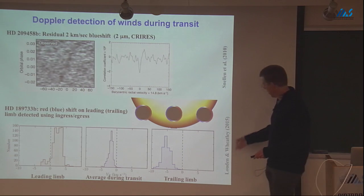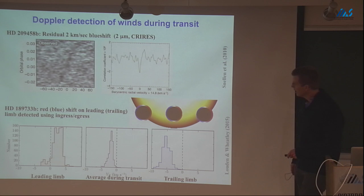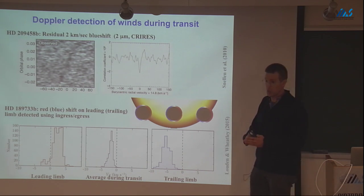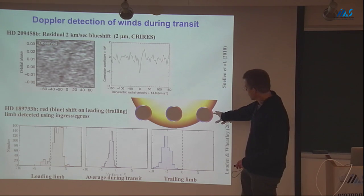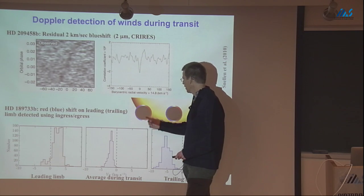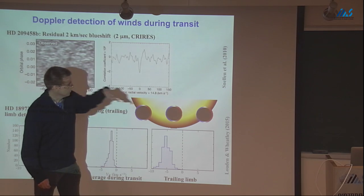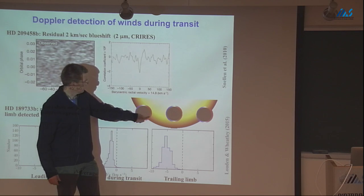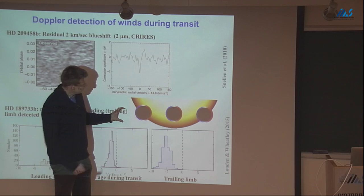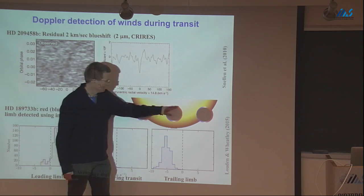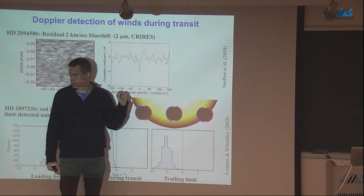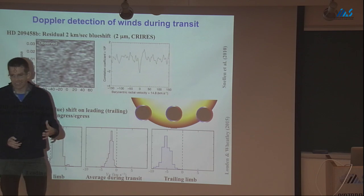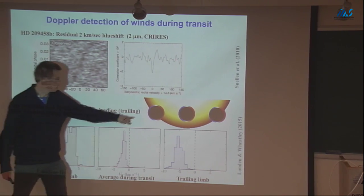A recent paper by Ludin and Wheatley used archival HARPS data looking at the sodium D line in the visible. If there are winds or rotation, during ingress you're more sensitive to one limb and during egress to the other. Their analysis gives probability distributions for Doppler shifts on the leading and trailing limbs. The leading limb shows a net redshift of a few km/s, while the trailing limb shows a blueshift of about 7 km/s. Since the synchronous rotation speed is about 2 km/s, this implies winds of a few km/s beyond rotation on the trailing limb—a signature of a giant eastward equatorial jet, i.e., super-rotation.